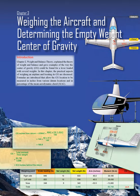Chapter 3: Weighing the Aircraft and Determining the Empty Weight Center of Gravity. Chapter 2, Weight and Balance Theory, explained the theory of weight and balance and gave examples of the way the center of gravity (CG) could be found for a lever loaded with several weights. In this chapter, the practical aspects of weighing an airplane and locating its CG are discussed. Formulas are introduced that allow the CG location to be measured in inches from various datum locations and in percentage of the mean aerodynamic cord (MAC).